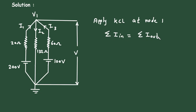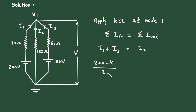Summation of I_in equals summation of I_out. The entering currents are I1 and I3, so I1 plus I3 equals I2. Writing in voltage form: I1 is (200 − V1) / 20, plus I3 which is (100 − V1) / 60, equals I2 which is (V1 − 0) / 132.